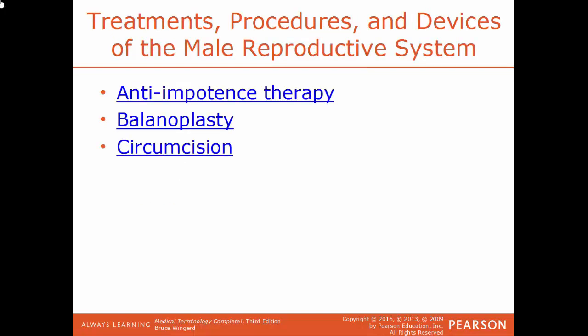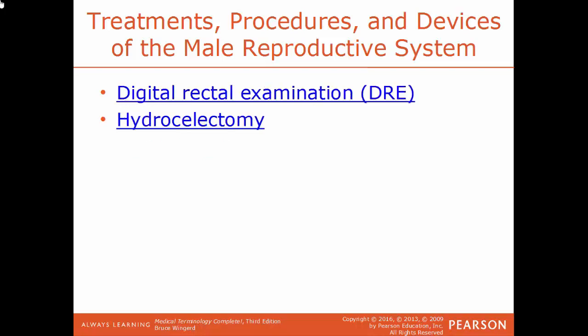Now we'll talk about some specific treatments and procedures for the male system. Anti-impotence therapy is any type of therapy used to treat the condition of impotence. Balanoplasty is a surgical repair of the glans penis. Circumcision is the removal of the foreskin of the penis. DRE, a digital rectal examination, is where a finger is inserted into the rectum. Hydrocelectomy is the surgical removal of a hydrocele.